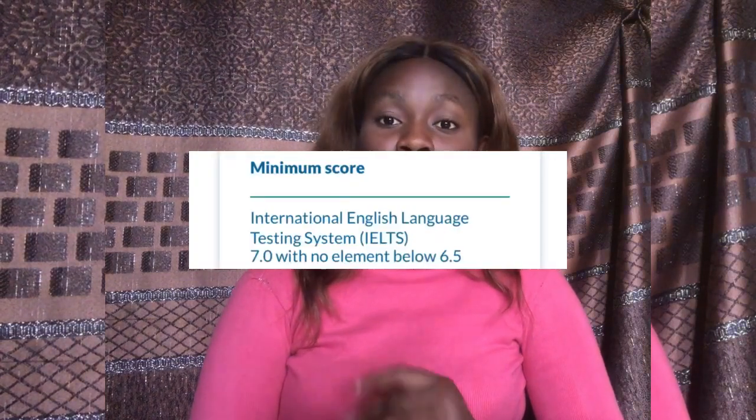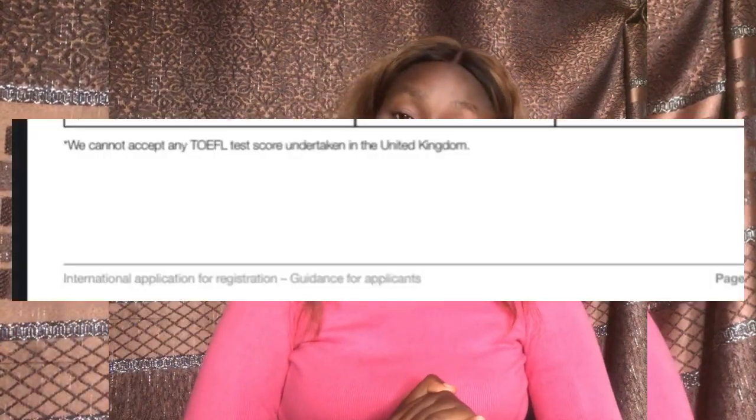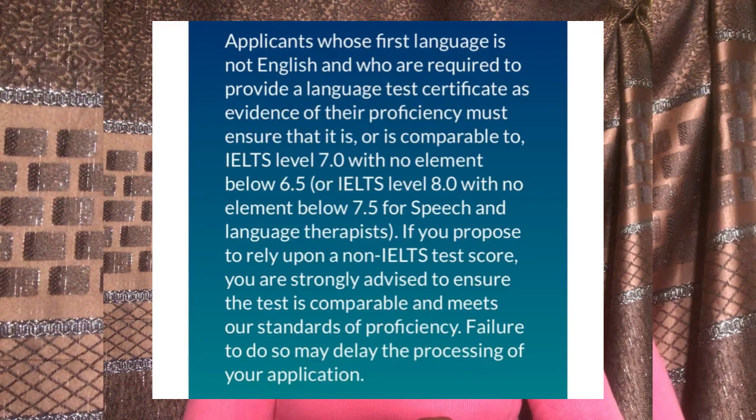If you already want to take IELTS or TOEFL, that is fine. For IELTS, the minimum score to be registered as a biomedical scientist is 7.0 overall, with no component less than 6.5. For TOEFL internet-based test, you need at least 100 out of 120. Note that HCPC will not accept TOEFL taken in the UK, so ensure it was taken outside the UK. If you choose another English exam, it is your sole responsibility to prove it is comparable to IELTS or TOEFL.